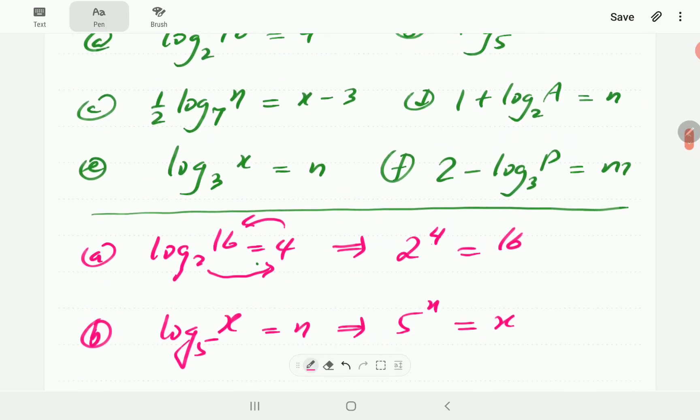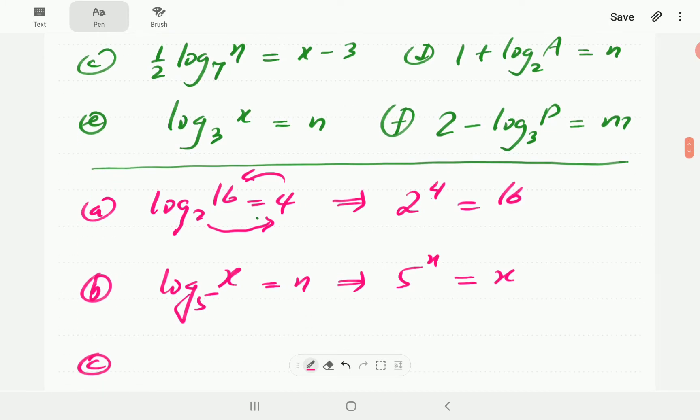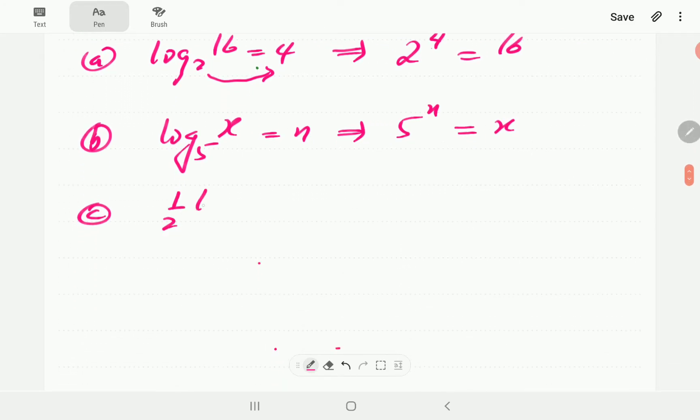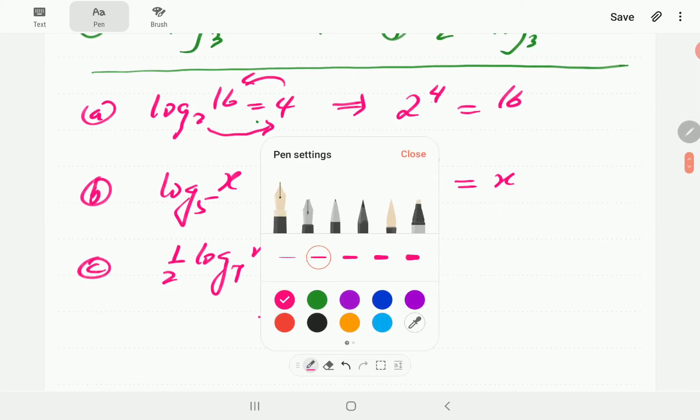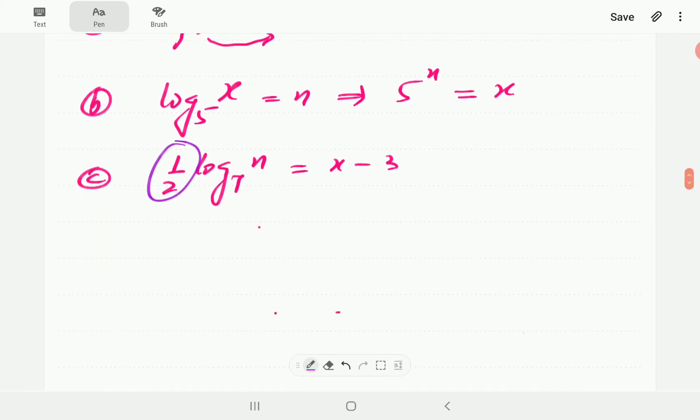In part c, we've got 1 half log n base 7 is equal to x minus 3. Now, in this case, the logarithm has got another term accompanying it. So, whenever this happens, the first thing we need to do is we need to first isolate the logarithm term.